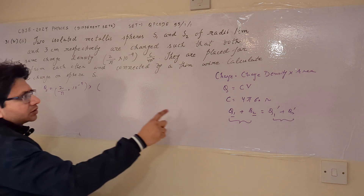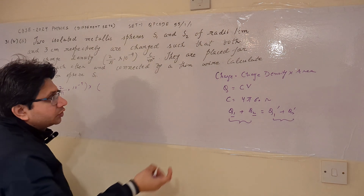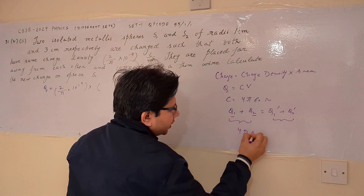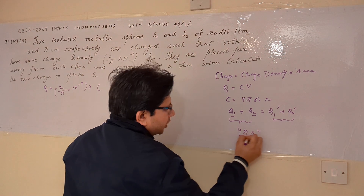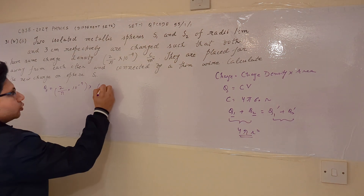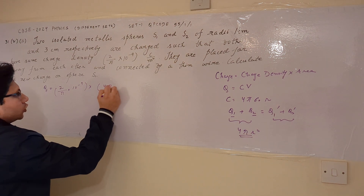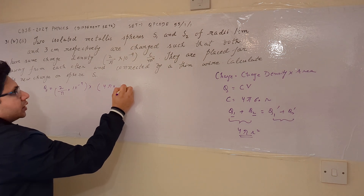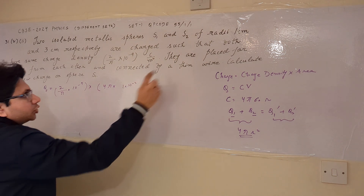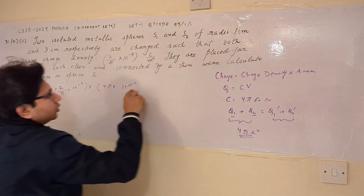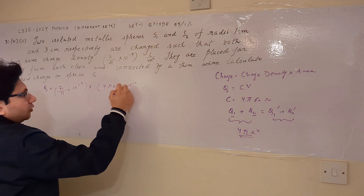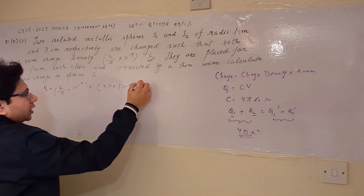Since the area of a sphere is 4πr², we have 4π × (1 × 10⁻²)², because the radius is in centimeters and we have to convert it into meters, and it is squared.